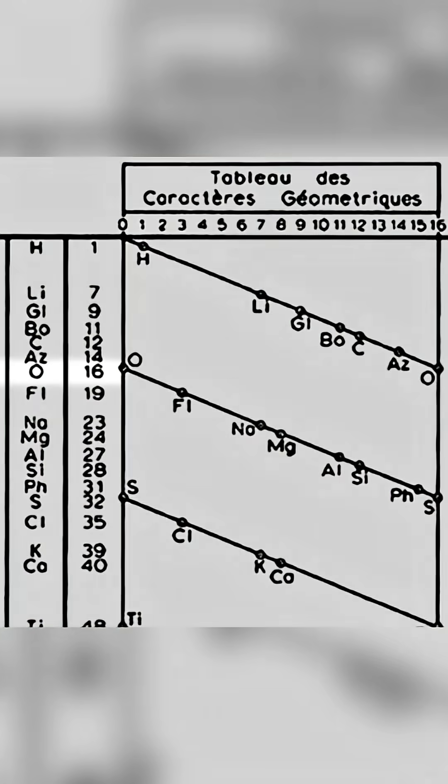Continuing all the way to oxygen, which has a relative weight of 16, we can see that it's right on the boundary of the 16 unit wide table, so it has a dot at the end of the first diagonal line and at the beginning of the second diagonal line.